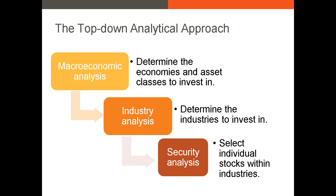The second step is industry analysis, where we identify the conditions in each industry or sector of a market to determine whether we should overweight or underweight some industries. Different industries offer different opportunities or challenges. Some industries, like the brick-and-mortar clothing retail industry, have been declining for years, so we might reasonably underweight that industry if we think the conditions leading to that decline will continue.